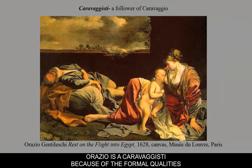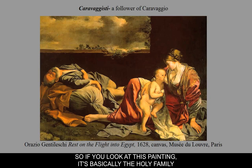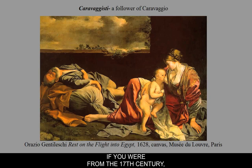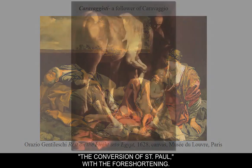Orazio is a Caravaggisti because of the formal qualities he uses and also some of the content or symbols he employs. If you look at this painting, it's basically the Holy Family, depicted in such a way that if you were from the 17th century, the 1600s, you could imagine this was your family. On the left-hand side there's Joseph reclining, and his pose recalls Caravaggio's painting The Conversion of St. Paul with the foreshortening.